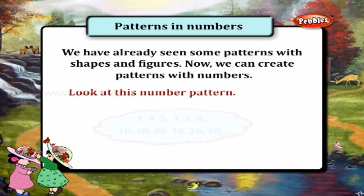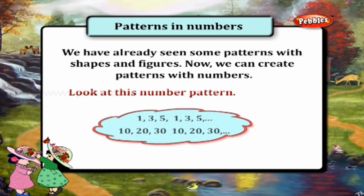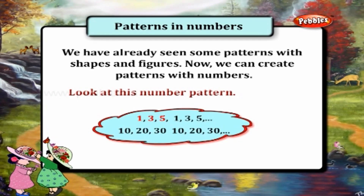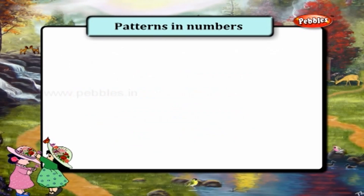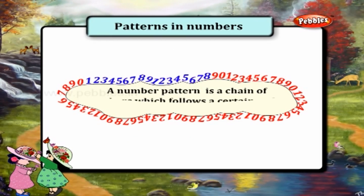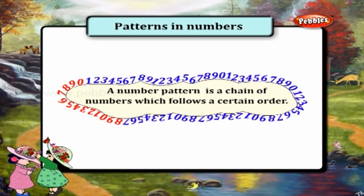Look at this number pattern: 1, 3, 5, 1, 3, 5 and 10, 20, 30, 10, 20, 30. A number pattern is a chain of numbers which follows a certain order.